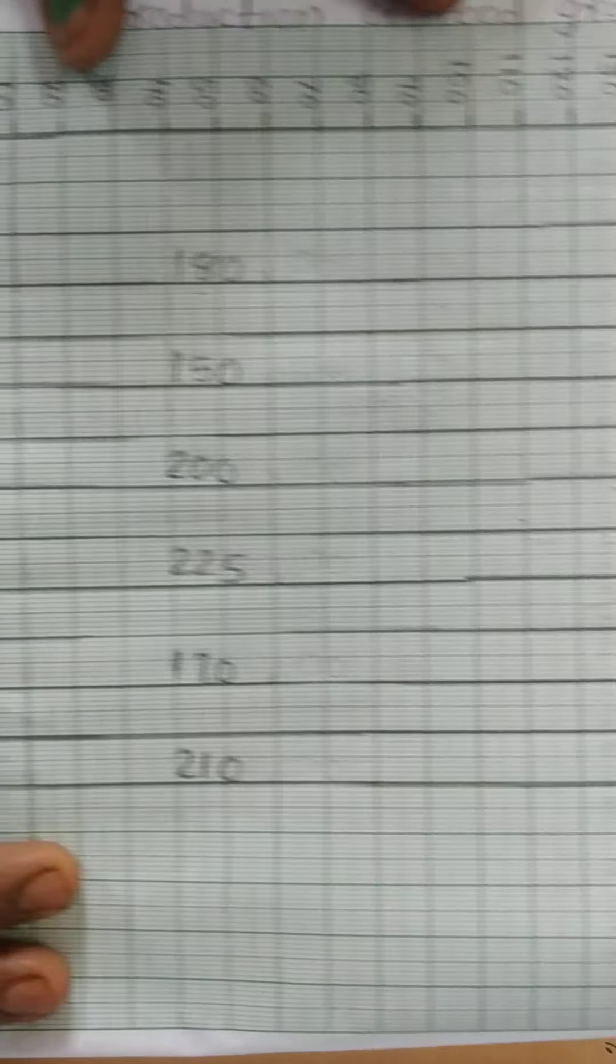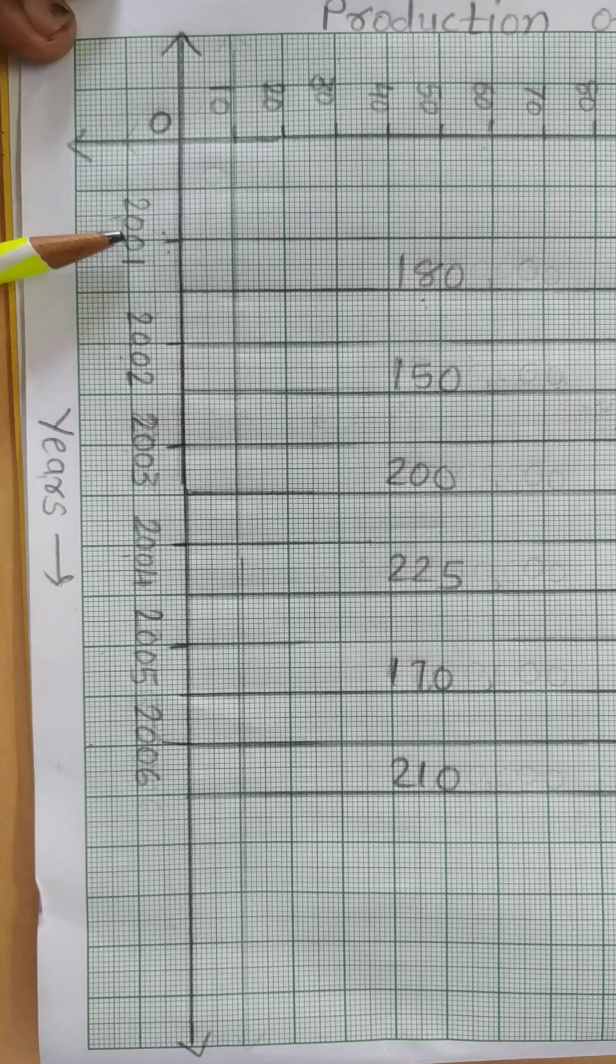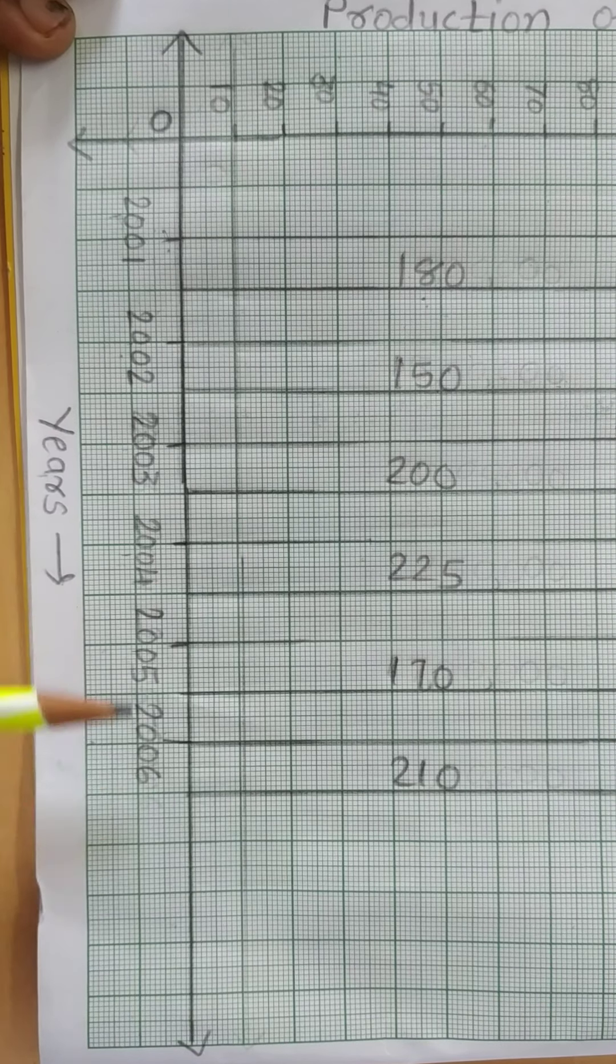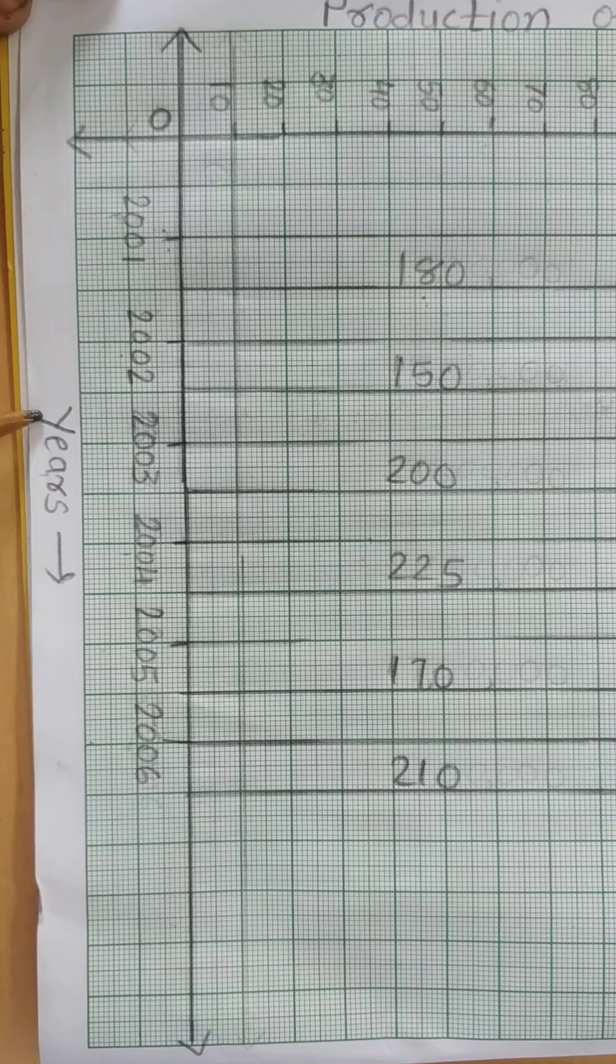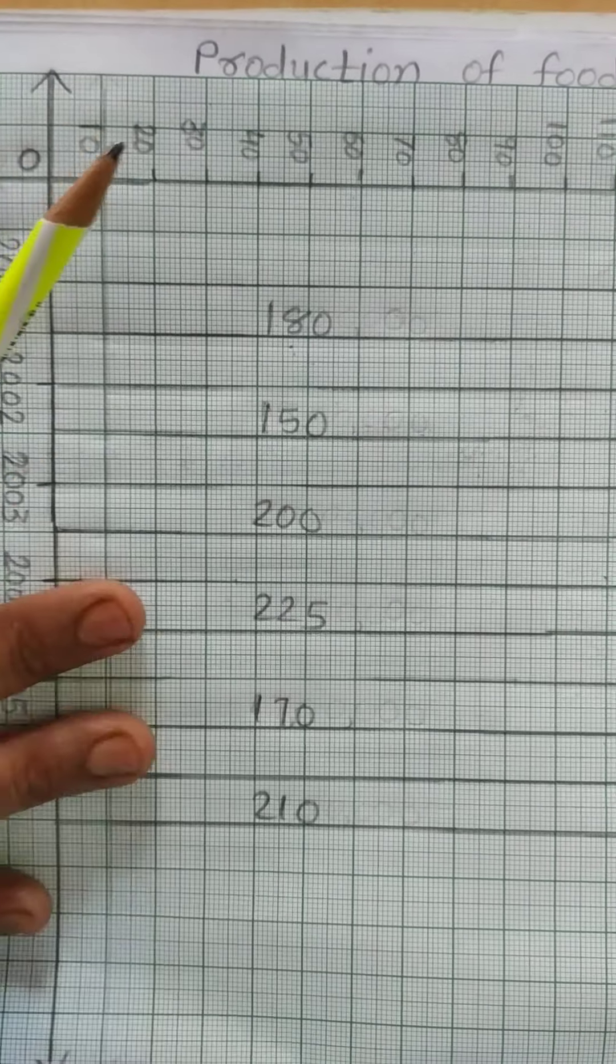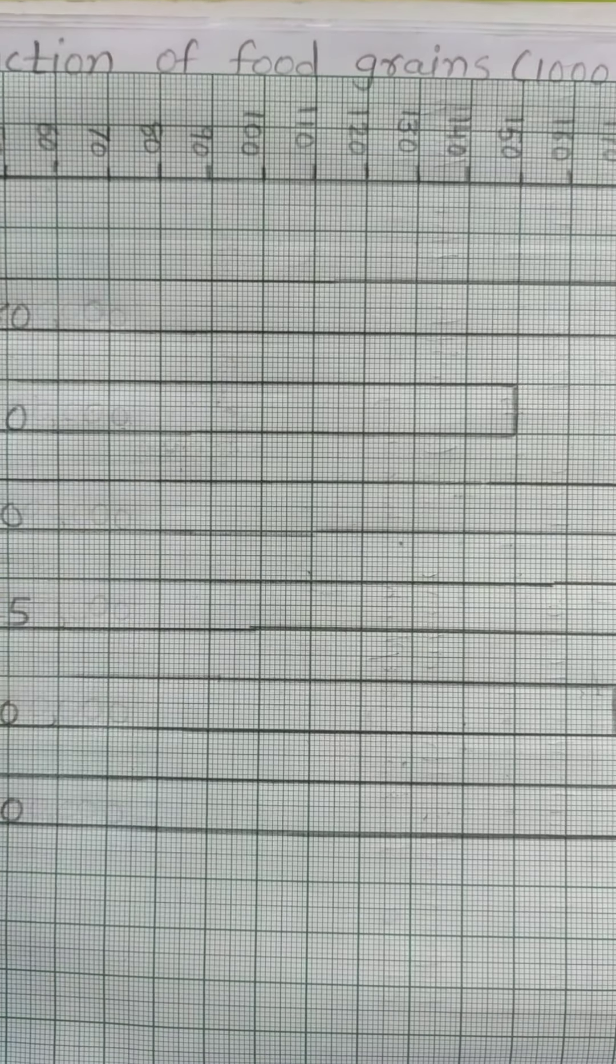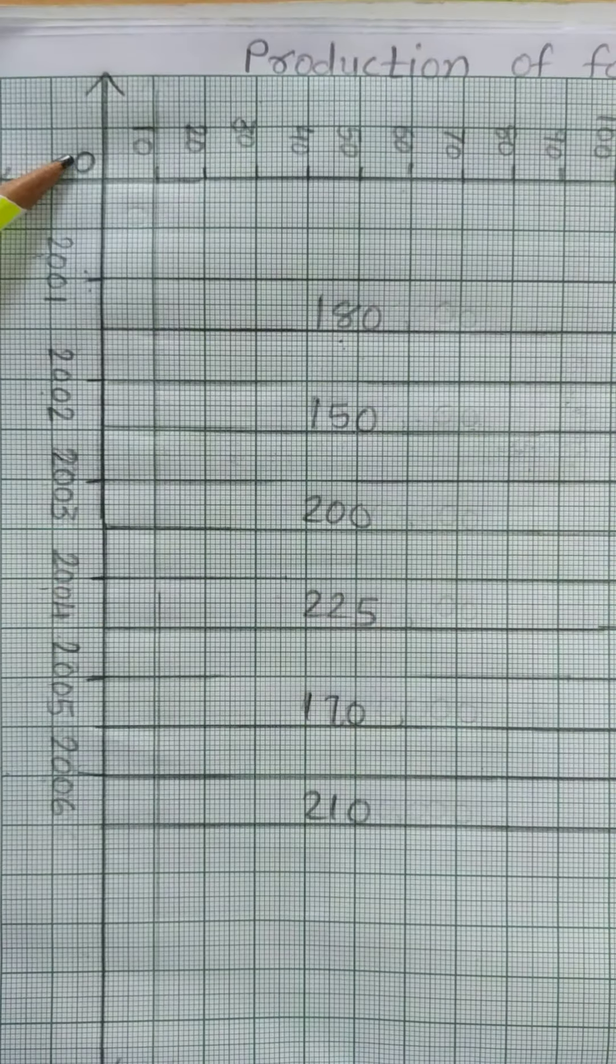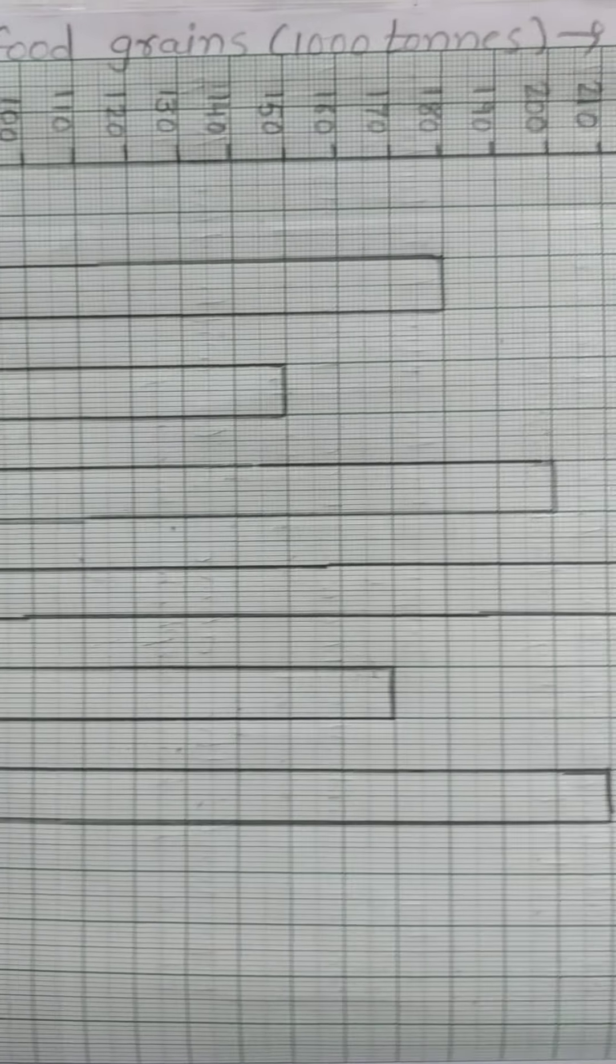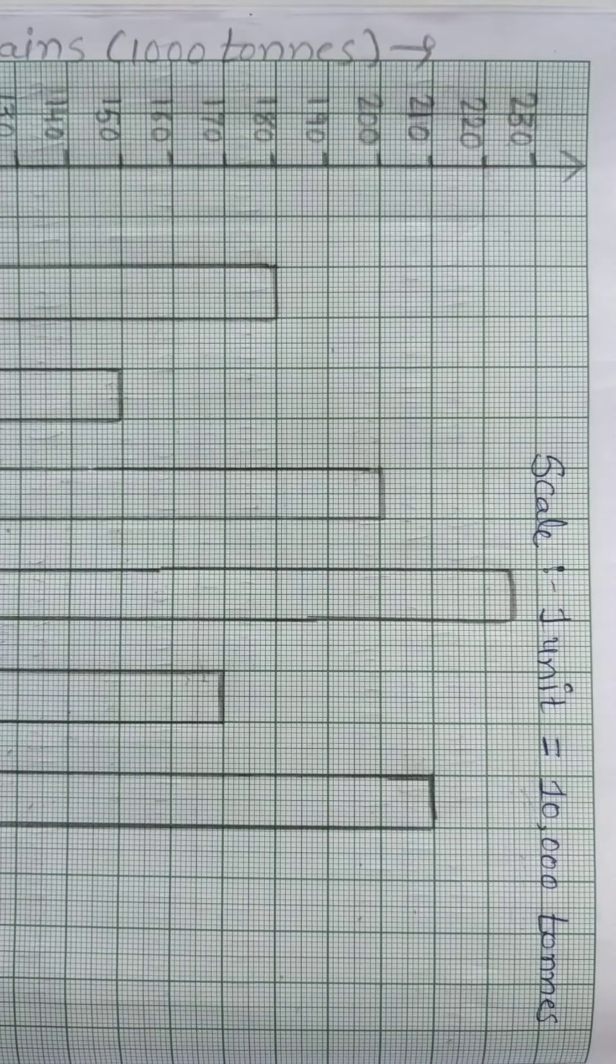On x-axis you are the height, you could see two boxes distance from 2001, 2002, 2003, 2004, 2005, 2006. On y-axis we start with 0, 10, 20, 30, up to 230 we will write. This way you can write now.